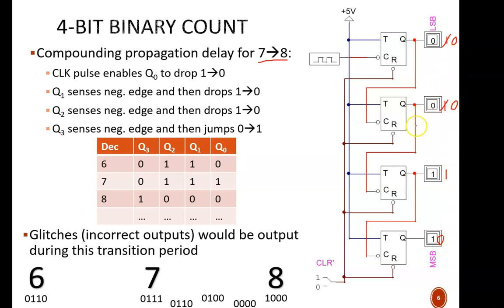That negative pulse causes the next flip-flop to toggle, and the count reads 0, 0, 0, 0. Finally, that negative pulse causes the most significant bit to toggle up to 1, and we reach the correct count of 1, 0, 0, 0.